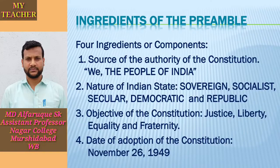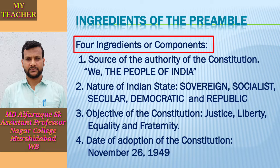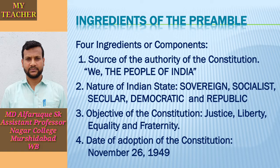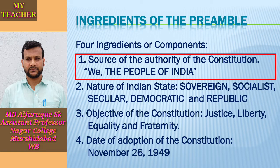If you study the Preamble of the Indian Constitution deeply, you will see four ingredients. First of all, you will see the source of authority of the Constitution. The Preamble starts with 'We, the people of India,' which means the Indian people are the authority of the Indian Constitution. The Preamble states that the Constitution derives its authority from the people of India.